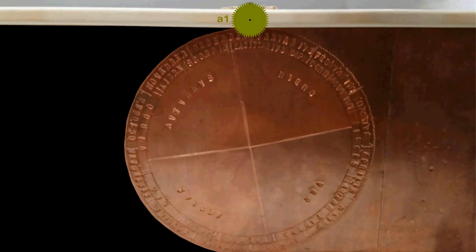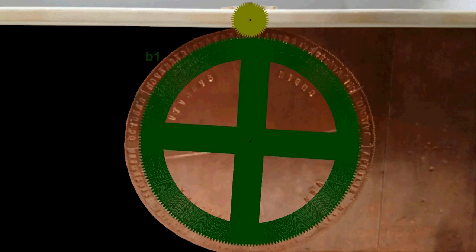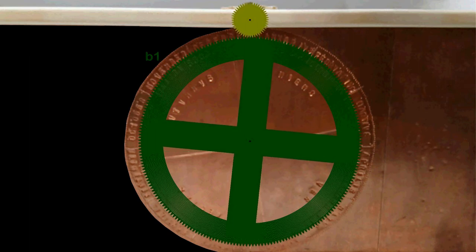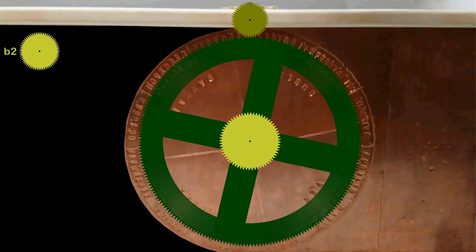At the very top we have the setting wheel. It's like a time machine. If we turn it forward we go into the future. And if we turn it backwards we go into the past. This dial A1 engages the big main wheel B1 with the four spokes that the Antikythera mechanism is known for.